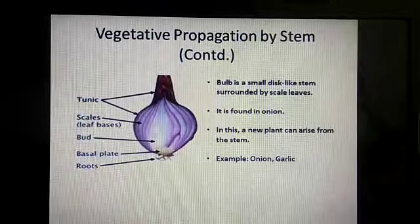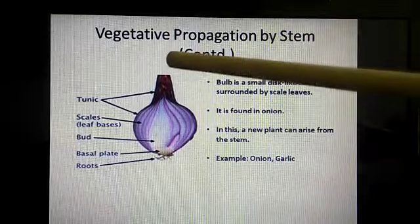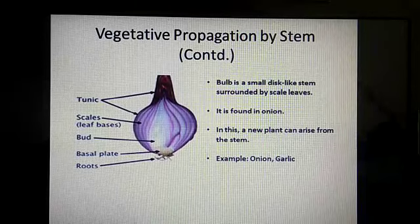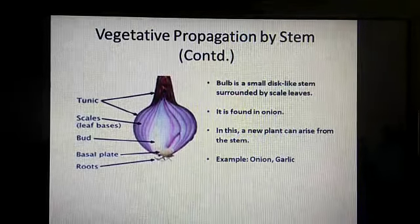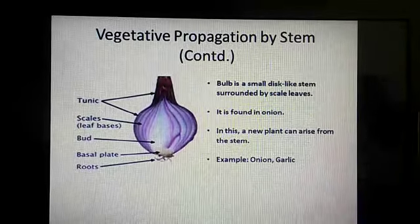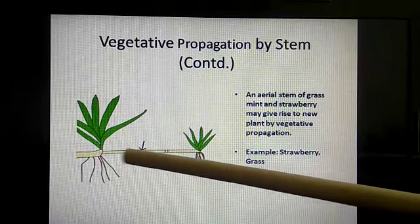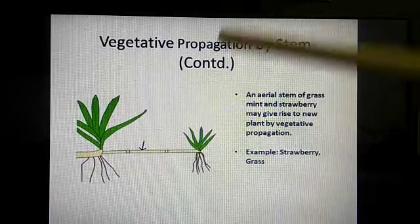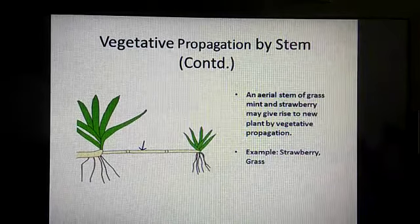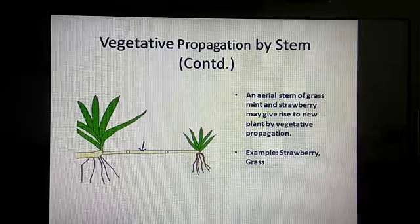Next is a picture of onion. This is also a modified stem — basically it is called a bulb. It again develops a stem, and the stem develops into a new plant without using seeds. Here is an example of grass — you can see this aerial stem. Wherever it gets favorable conditions, new roots will develop and new plants can develop from there. Examples include strawberry, grass, and mint.